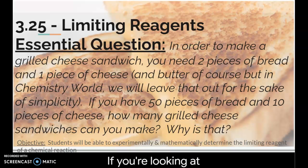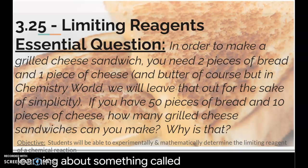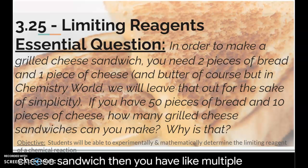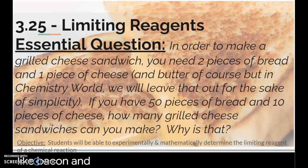All right, so if you're looking at that 3.25 paper, we're going to be learning about something called limiting reagents today. Obviously, if you were making a real grilled cheese sandwich, then you would have like multiple slices of cheese and butter and maybe you'd even put some bacon in there. But we're just going to make this really simple for today.